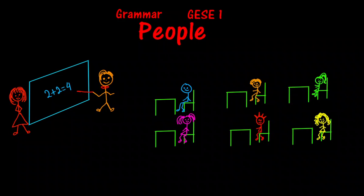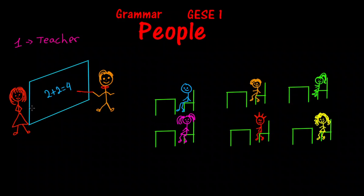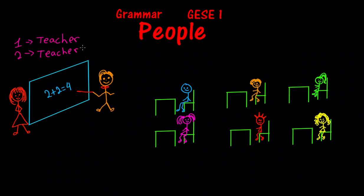And because they are teachers, if we just looked at one, we would write 'teacher'. But since there are two, we would write 'teachers'. So when we talk about one, there is no S. But when we talk about more than one teacher — two teachers or more — we put an S.